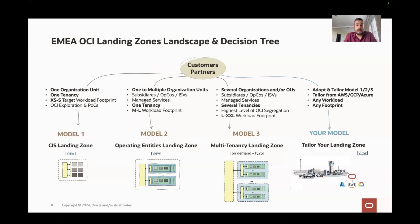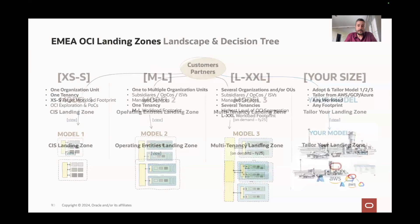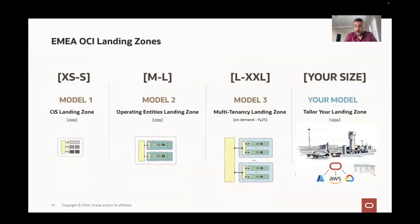When this model is not enough, you can have your own model and tailor your landing zone. You can adopt and tailor from model one, two, or three, or you can tailor from AWS, GCP, or Azure. That will be ready for any workload, any footprint, any operating model. So this is the menu — three sizes or your size.